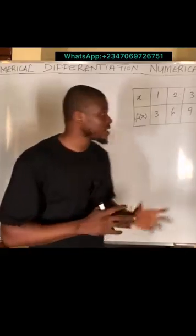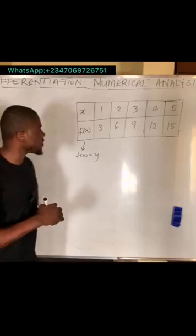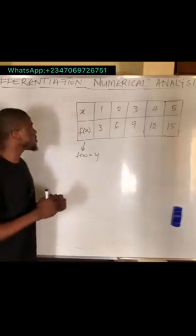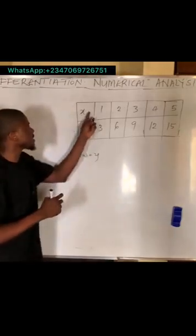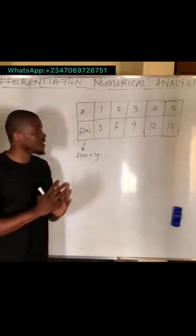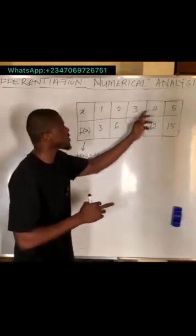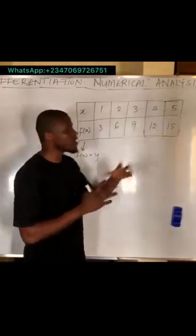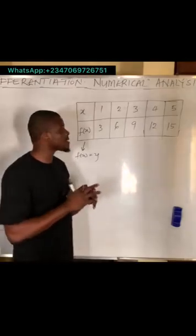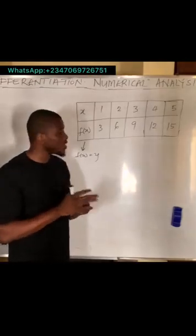Let's take a look at this table on the board. If you exclude the part that contains x and y, and consider only the parts with three values — which is 1, 2, 3, 4, and 5 — this part is categorized into five places.